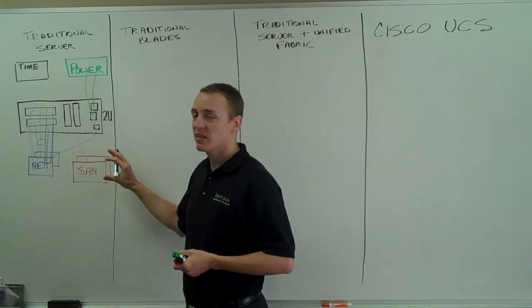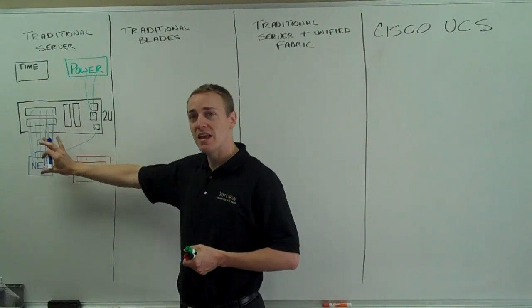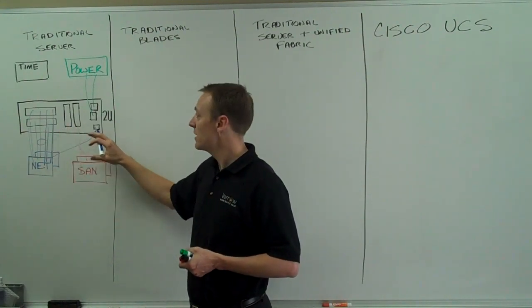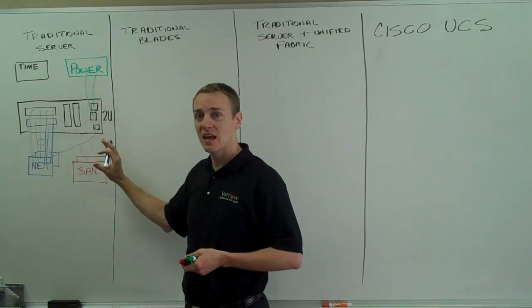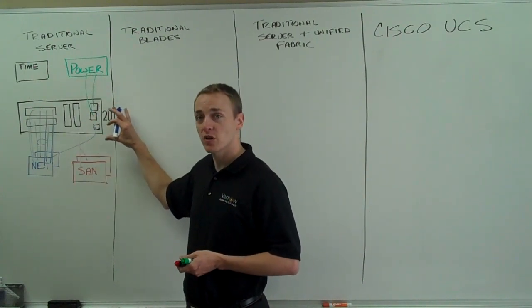Now, a lot of things to think about here. We've connected eight NICs, two HBAs, an ILO, and two power. That's 13 cables. This is a 2U server.